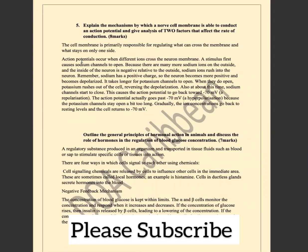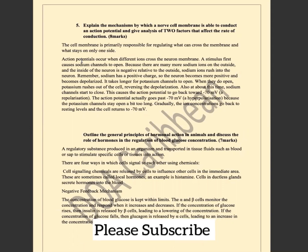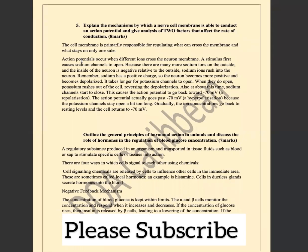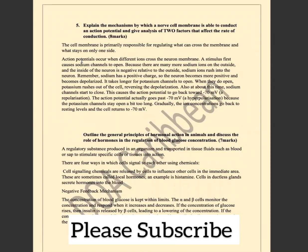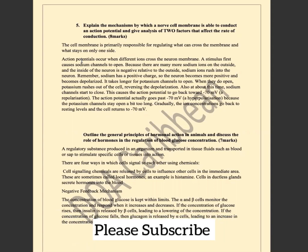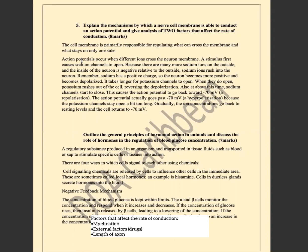A stimulus causes sodium channels to open. Because there are many more sodium ions on the outside, sodium ions (Na⁺) rush into the neuron. The internal part of the neuron becomes more positive and therefore becomes depolarized. When enough sodium ions enter to depolarize the cell membrane, an action potential arises, which generates an impulse. It's important to consider steps like resting potential and threshold before the action potential, but the question specifically asks for the action potential process.